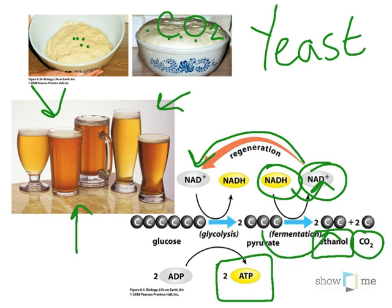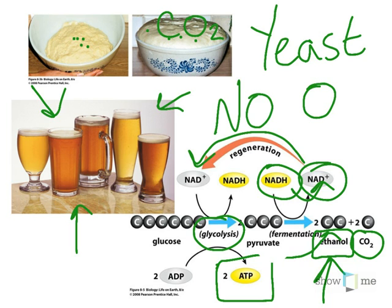So those are the anaerobic pathways. Glycolysis always happens first, and remember it happens in every living thing in essentially the same way. That leads to pyruvate. And if there is no oxygen present — remember, all of these are anaerobic, no oxygen — it continues on into fermentation: either alcoholic fermentation or lactic acid fermentation.